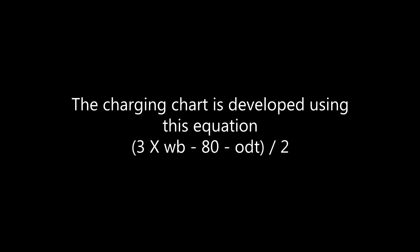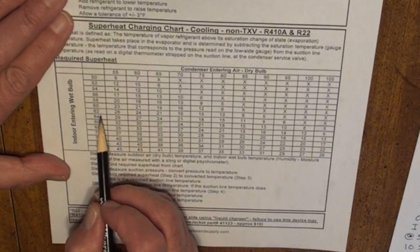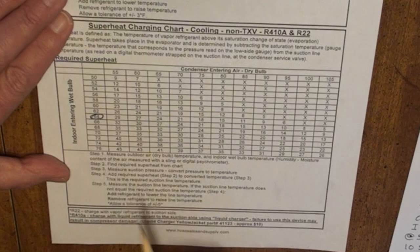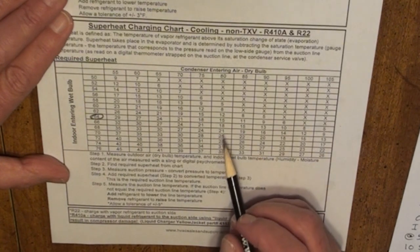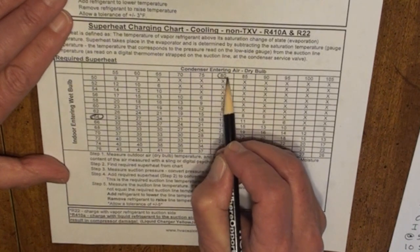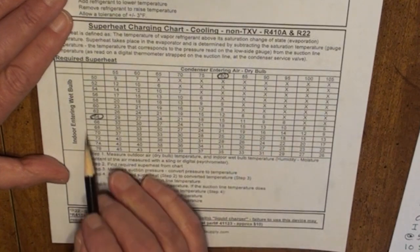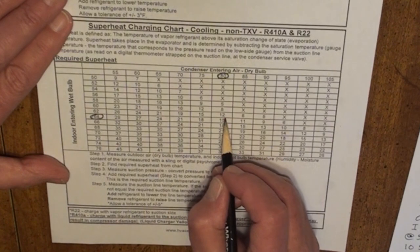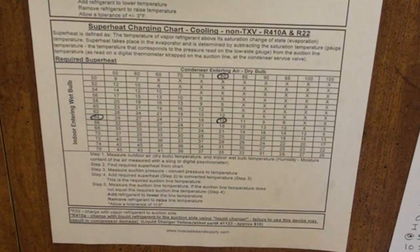For example: if we have 64 degrees entering wet bulb temperature at the evaporator return and an outdoor temperature of 80 degrees, we would expect a measured superheat of 15 degrees. As the conditions vary, the superheat reading will also vary.